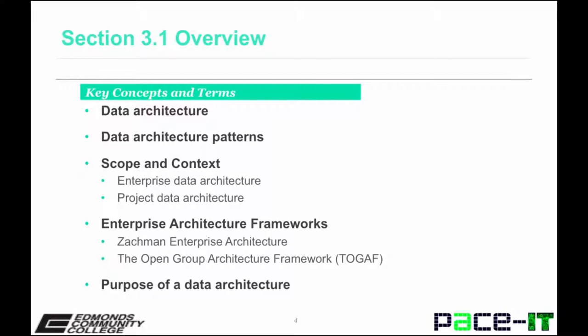It's also important to understand the scope of a data architecture. For example, you'll want to know the difference between an enterprise data architecture and a project data architecture. A project data architecture could be a subject area focus, a database design, logical models needed for a specific information system, or data structures for a specific application or set of applications. An enterprise data architecture or enterprise data model is more strategic in nature and describes the information and data needs of an entire organization.